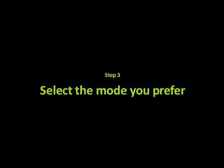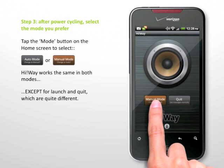Step 3: Select the mode you prefer. Tap the Mode button on the home screen to select which mode you want, either Auto Mode or Manual Mode. Highway works the same in both modes, except for Launch and Quit, which are quite different.